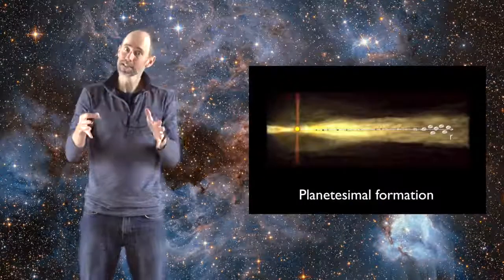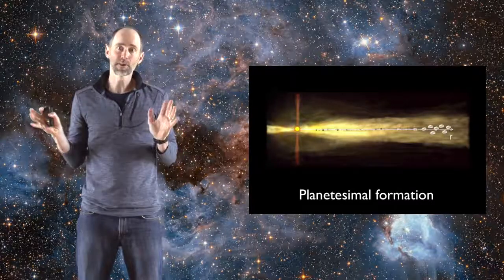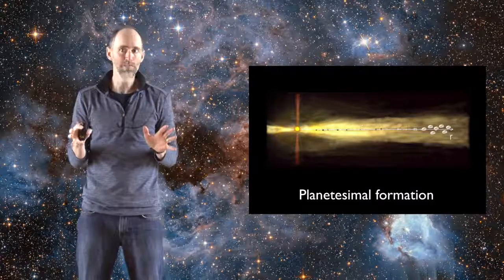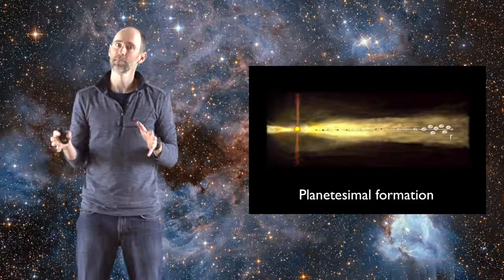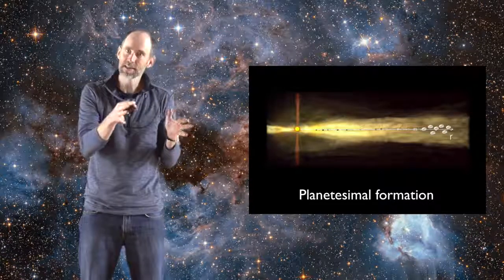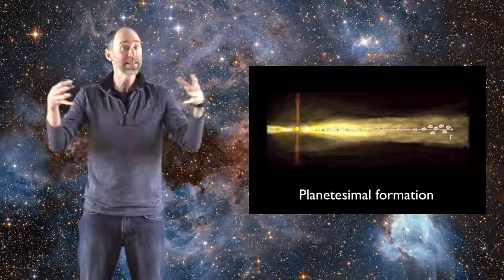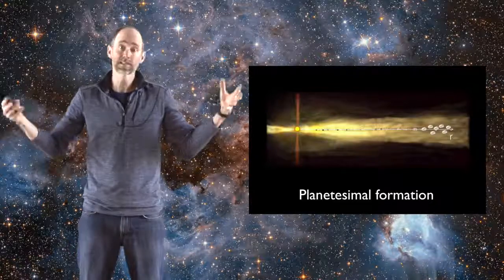So now let's talk about how pebbles grow into planetesimals and then into embryos. First of all, we think that planetesimals form directly from pebbles. Pebbles can drift within the disk, and they clump directly and jump into much larger objects into planetesimals. A group of drifting pebbles can be concentrated and clump directly into a larger body.